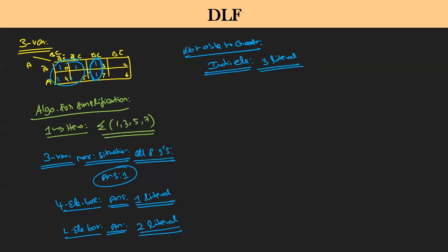So to summarize: if you make one big group of all 8, the simplification answer is 1. Four-element box: the answer is 1 literal — like A-bar or B. Two-element box: the answer is 2 literals. Individual element: 3 literals. If you understand these basics, you can solve it in seconds. Shall we go for the 4-variable map now? After that, we will see some examples.